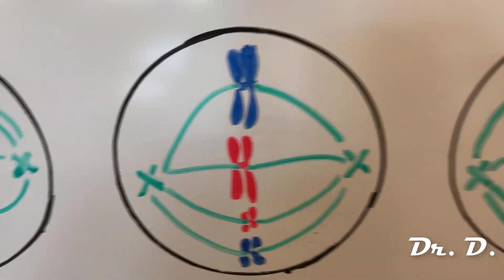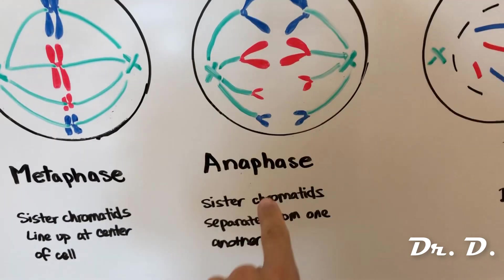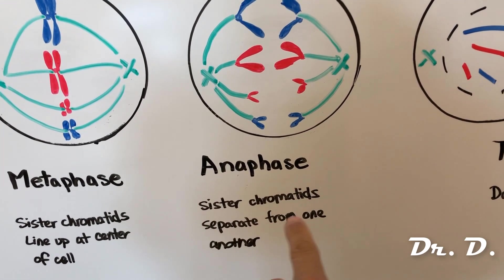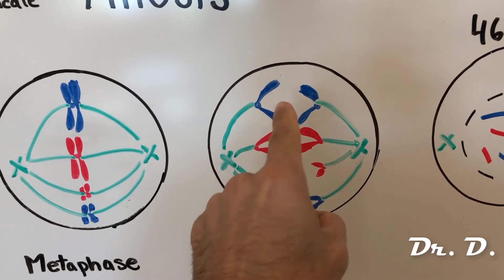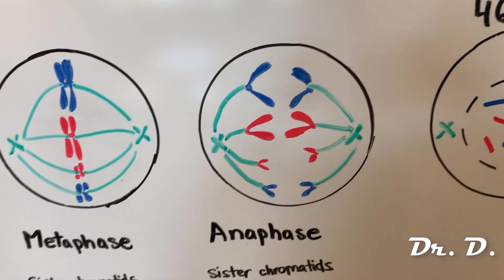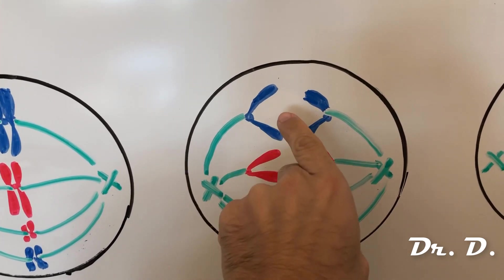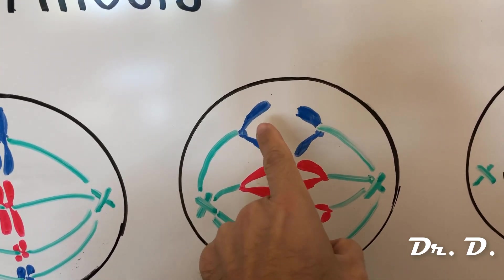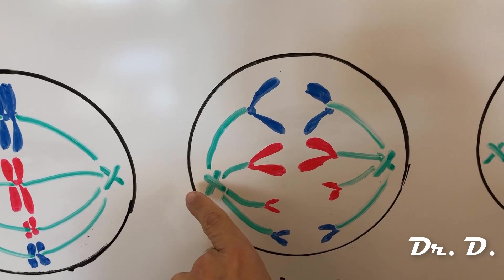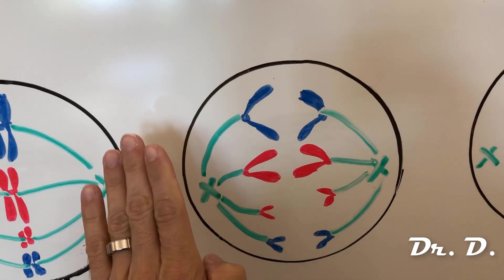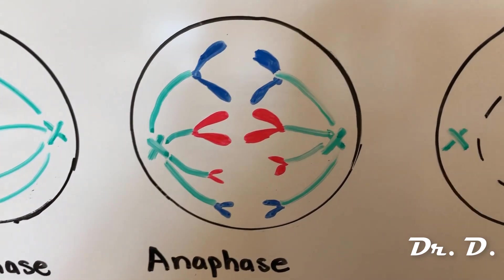The cohesin proteins holding the sisters together then break apart and let go. This is anaphase: sister chromatids separate from one another. One sister chromatid heads to the left and one to the right. Because the sisters carry the exact same information, the same genetic information goes to both sides — dad's chromosome 1 going to this cell, an exact copy of dad's chromosome 1 going to the other cell, and likewise for mom's chromosomes.